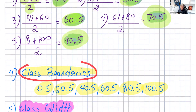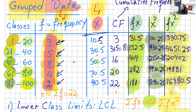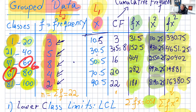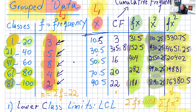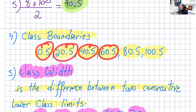Then we have the class boundaries. If you look at those classes, we go from 1 to 20, then jump to 21. The middle number between 20 and 21 is 20.5 — that's the boundary. Between the next classes it's 40.5, then 60.5, and 80.5. Since we're dealing with boundaries, we start from 0.5 and end at 100.5. So the class boundaries are: 0.5, 20.5, 40.5, 60.5, 80.5, and 100.5.